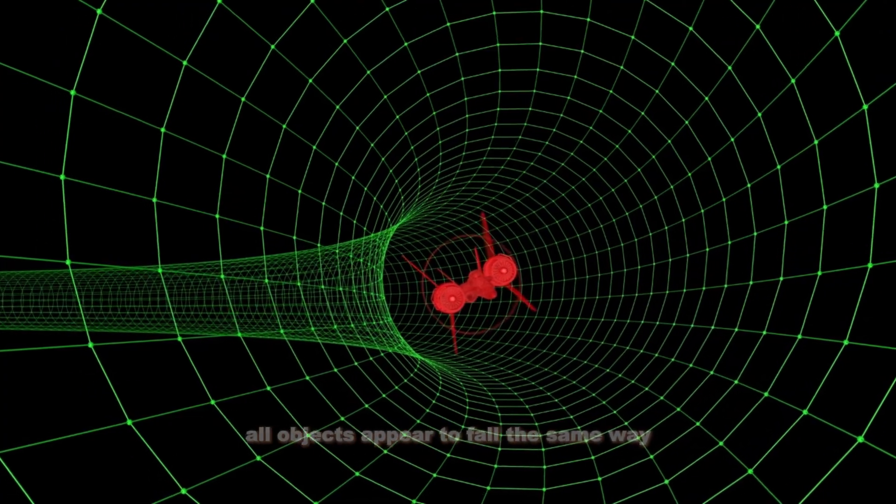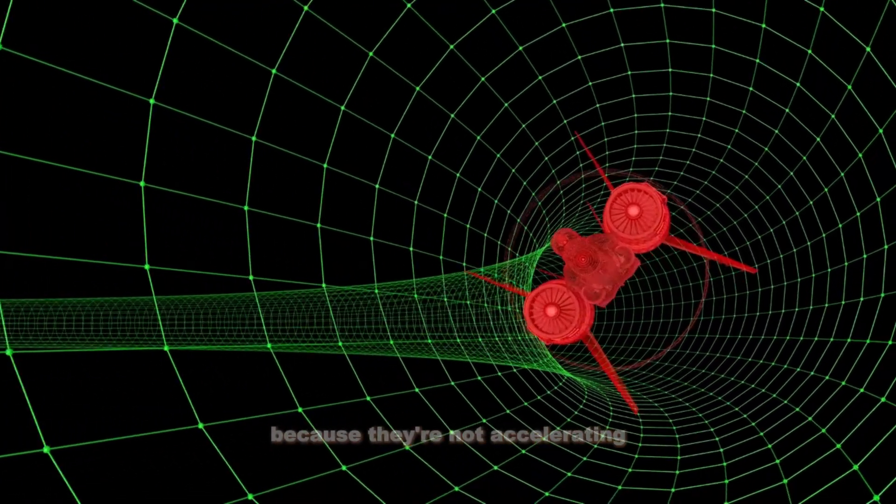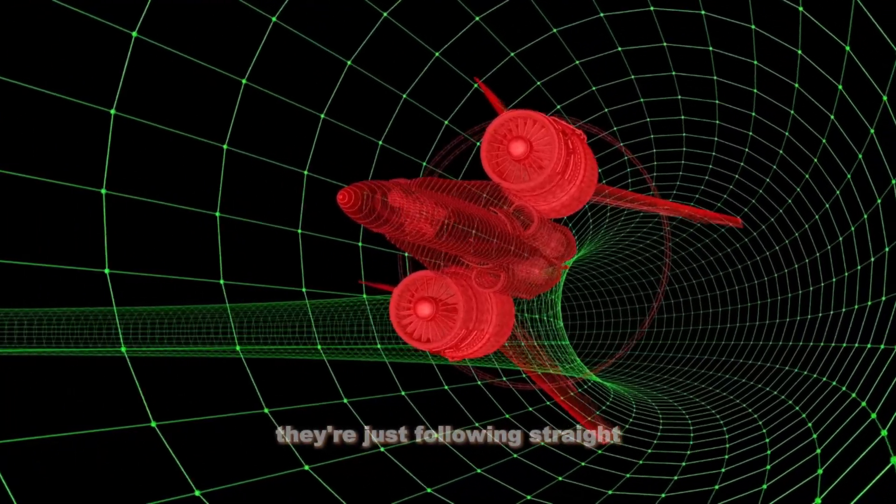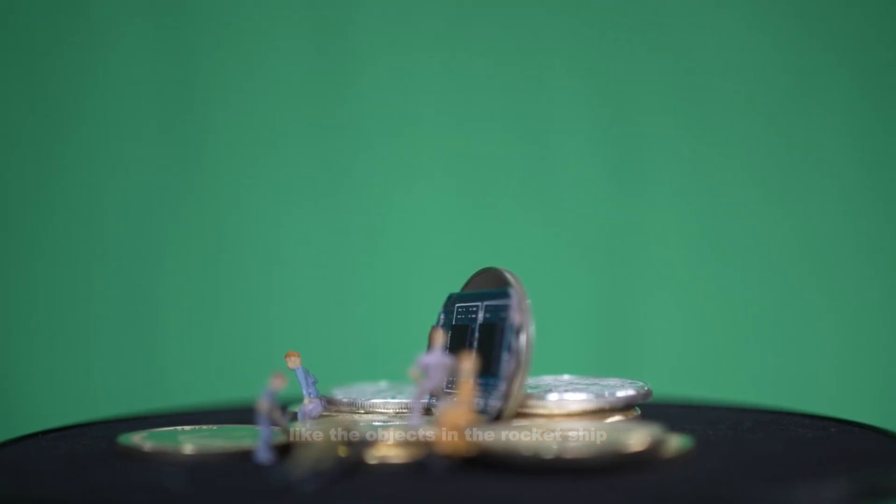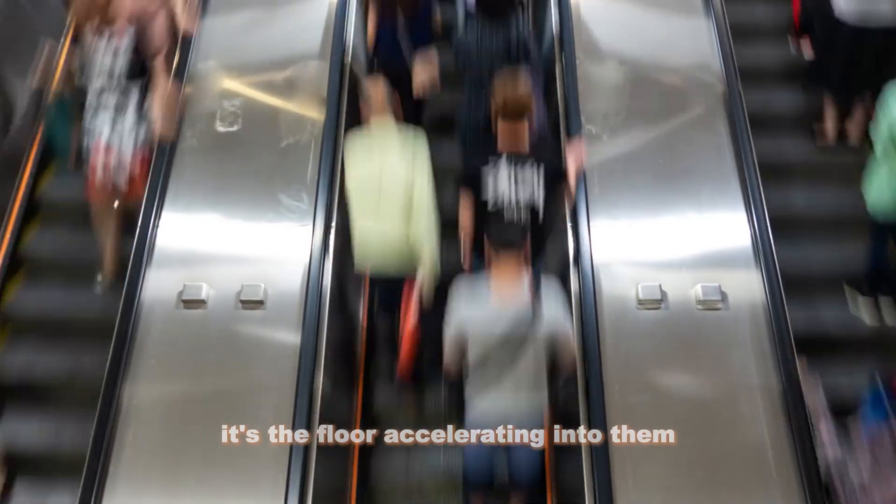But in general relativity, there is no mystery. All objects appear to fall the same way because they're not accelerating. They're just following straight-line paths through spacetime until they encounter something that stops them, like the objects in the rocket ship. They appear to accelerate at the same rate because they're not really accelerating. It's the floor accelerating into them.